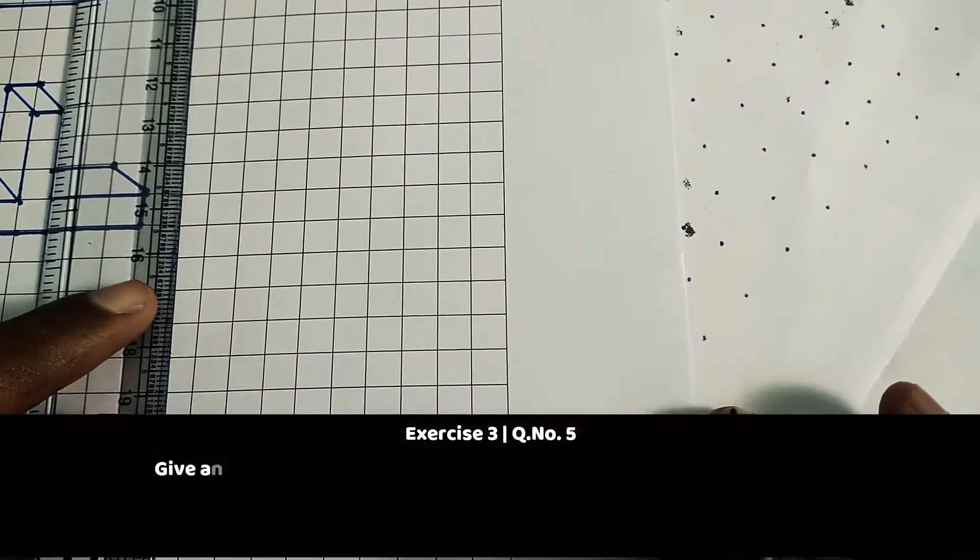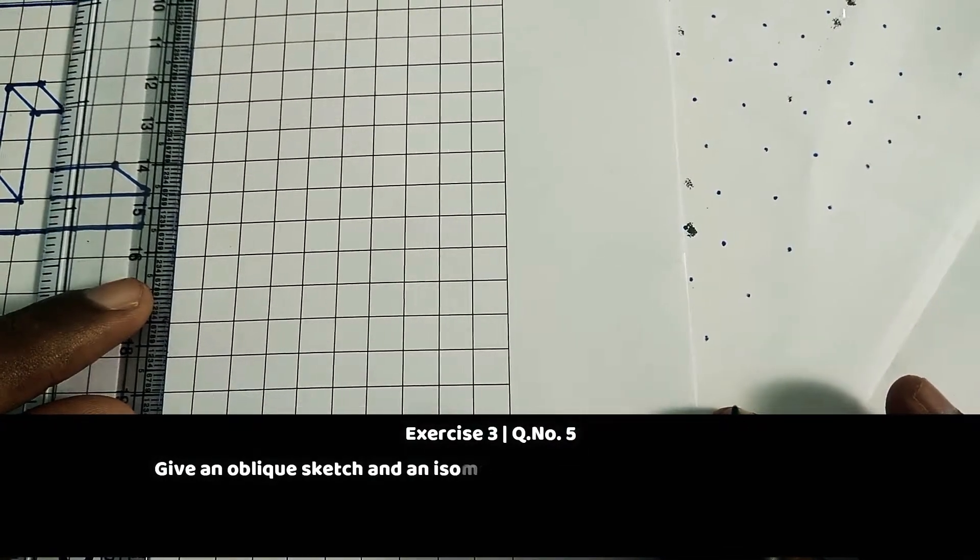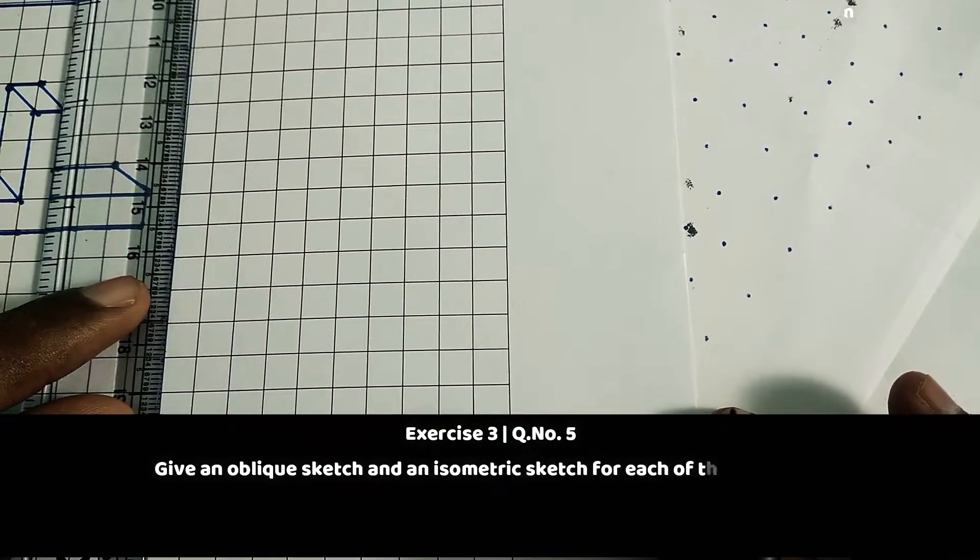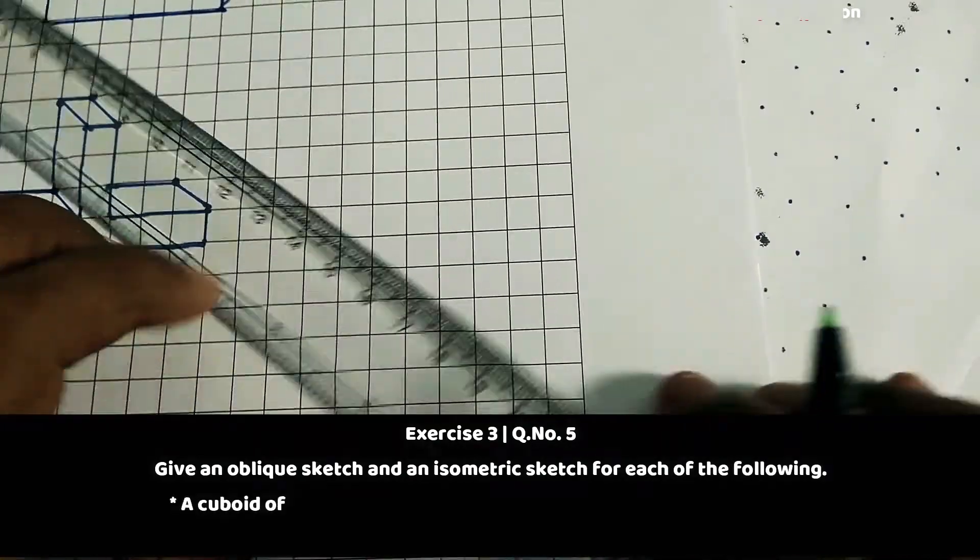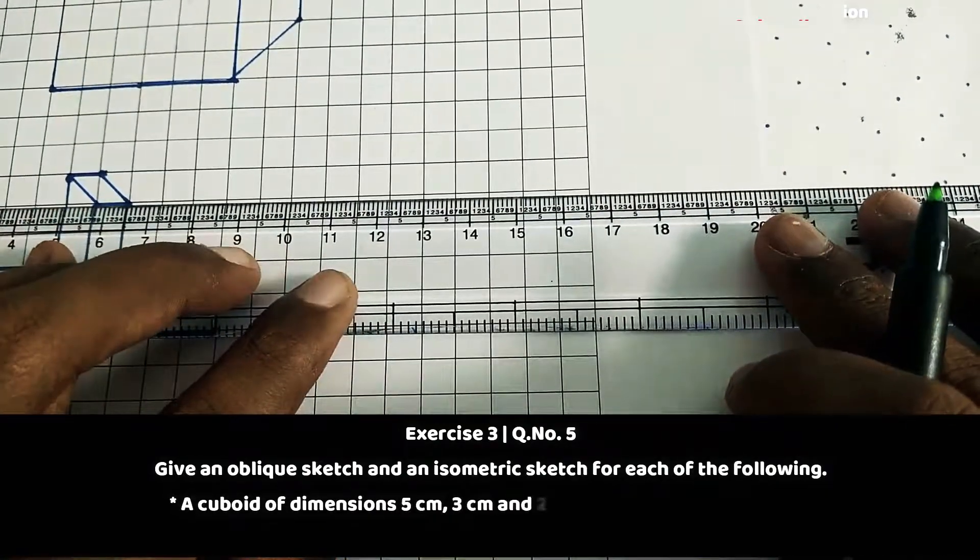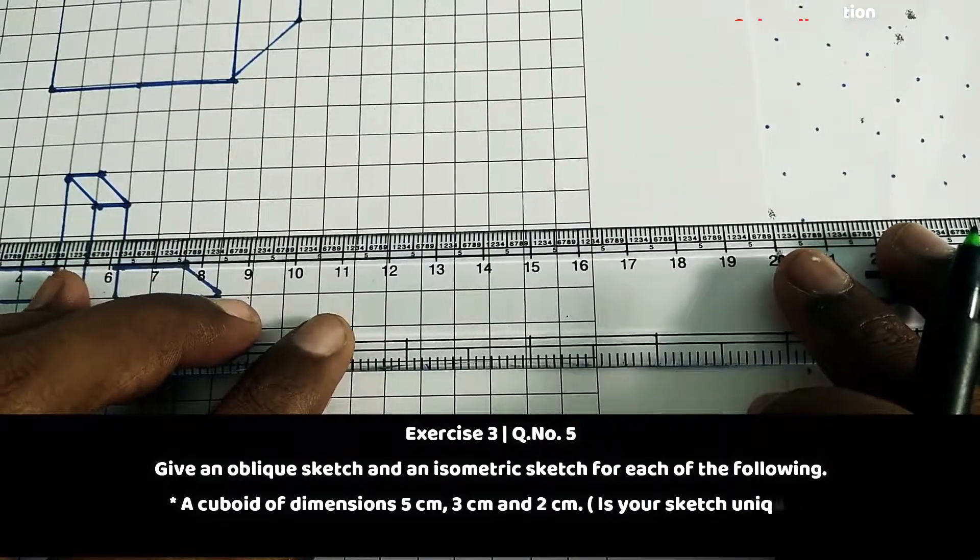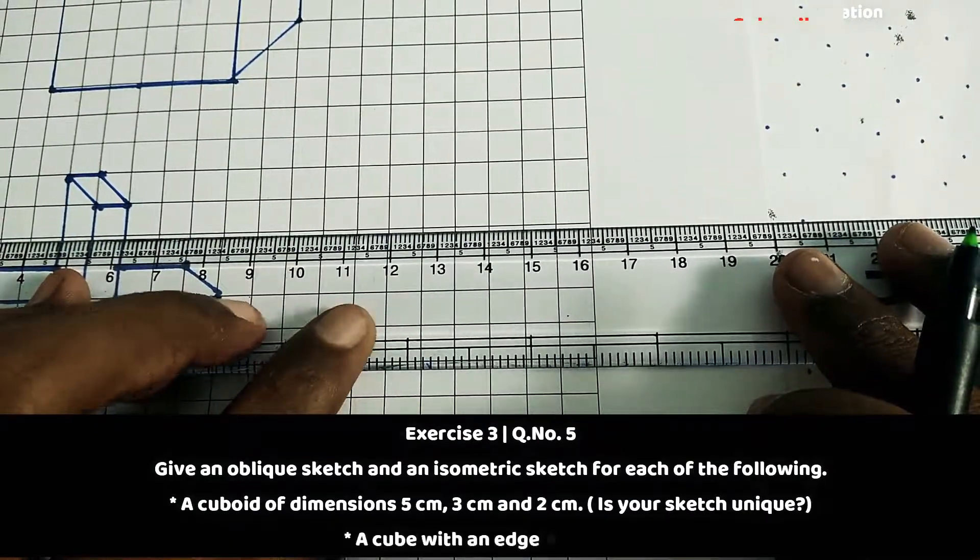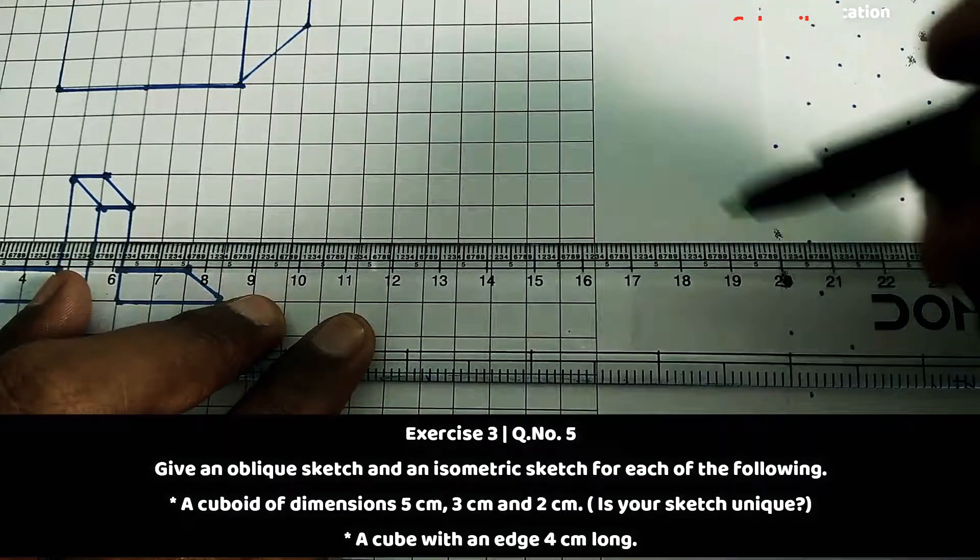Hello viewers, in this module we'll discuss question 15.5: oblique sketches. The dimensions given are 5 centimeters, 3 centimeters, and 2 centimeters. So draw with 5 centimeters. Here: 5 centimeters, 1, 2, 3, 4, 5. Then height will be 3 centimeters.